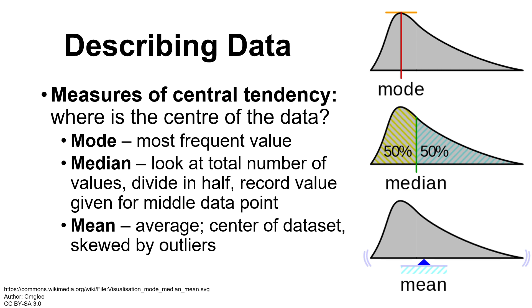The average is the mean. It's the center of our data set that we would collect by adding together all of our height measurements and dividing by the total number of measures that we took. The average is probably conceptually simple.